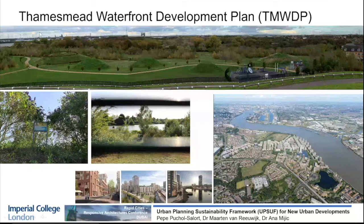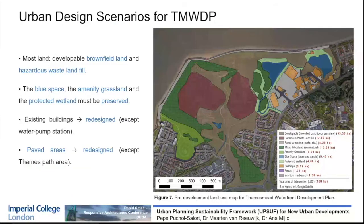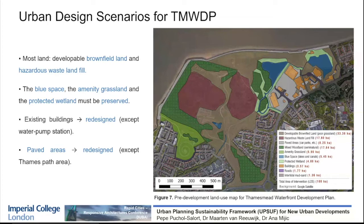Coming back to our framework, in order to know the different types of urban ecosystem services provided by this development — represented spatially in GIS — we chose one of the urban ecosystem services and natural capital evaluation tools to evaluate different types of scenarios: the urban design scenarios for the Thamesmith Waterfront Development Plan. The tool we used was NCPT, the Natural Capital Planning Tool. First, we studied the pre-development land use in this space, in order to see how changes in the post-development scenarios compare.